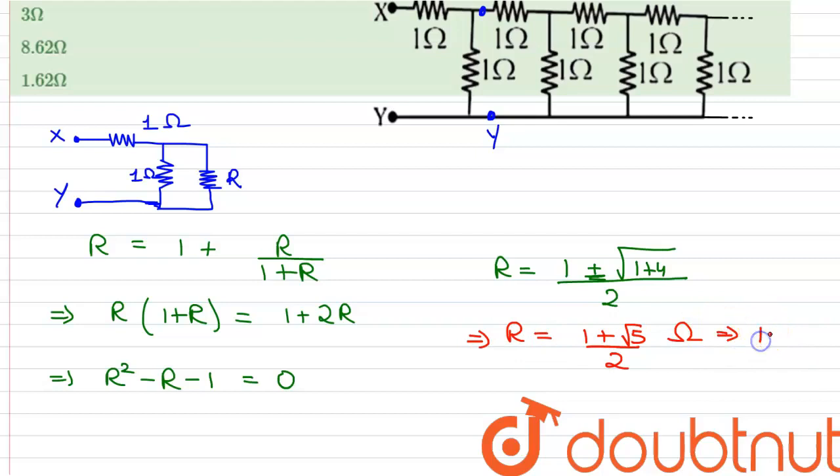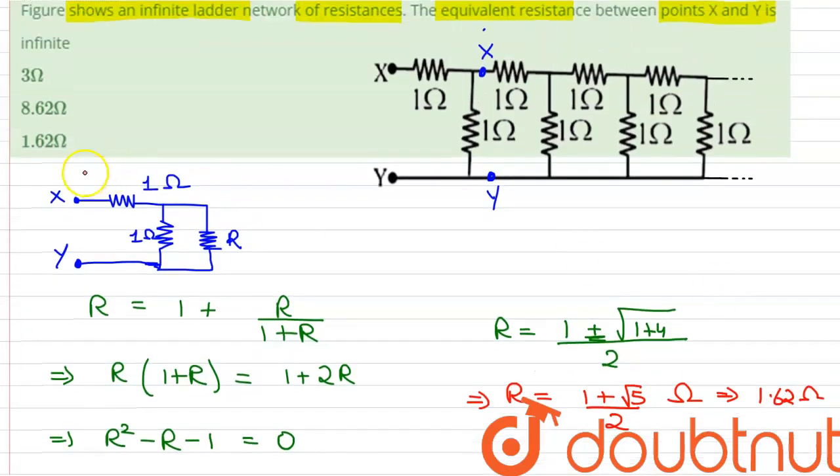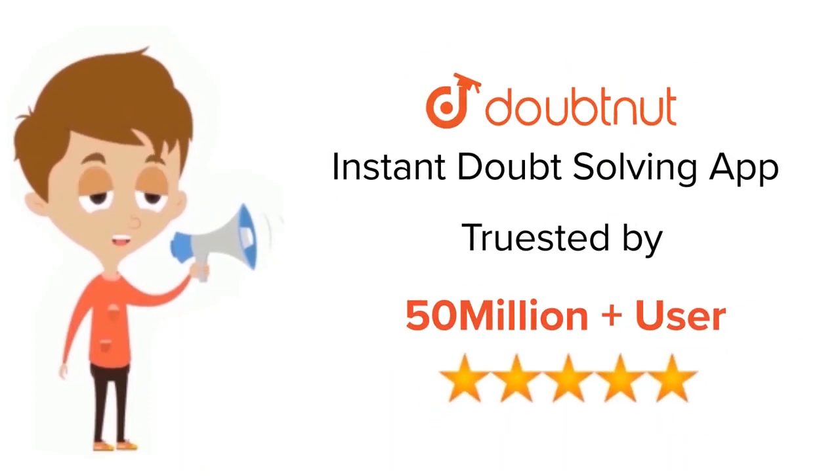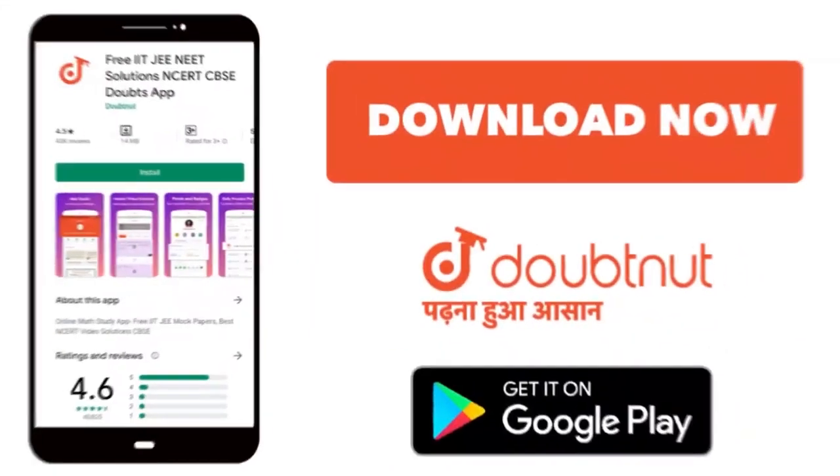Therefore, the answer is option D. Thank you. For class 6 to 12, IIT-JEE and NEET level, trusted by more than 5 crore students, download Doubtnet app today.